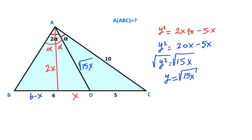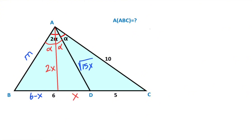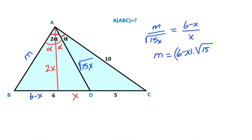Note that this total length is six, so six minus x is left on the other side. I want to represent this length with m. If we apply the angle bisector theorem for triangle ABD, the ratio of these two sides must equal the ratio of these two sides: m over √(15x) equals (6 − x) over x. So m = (6 − x) · √(15x) / x.